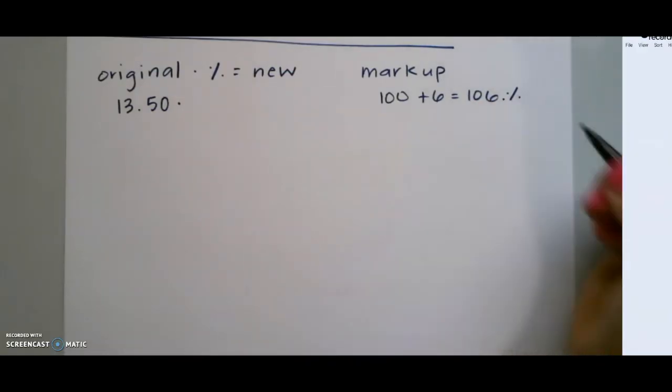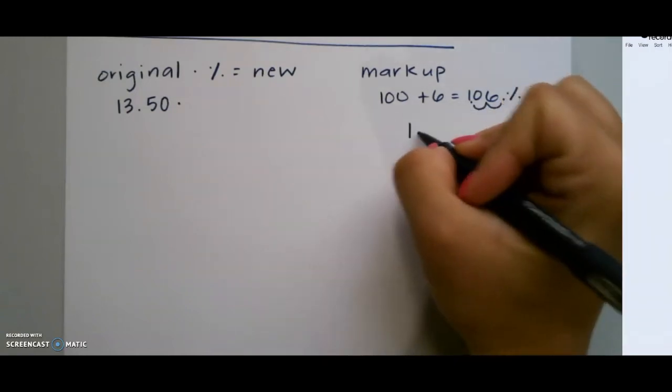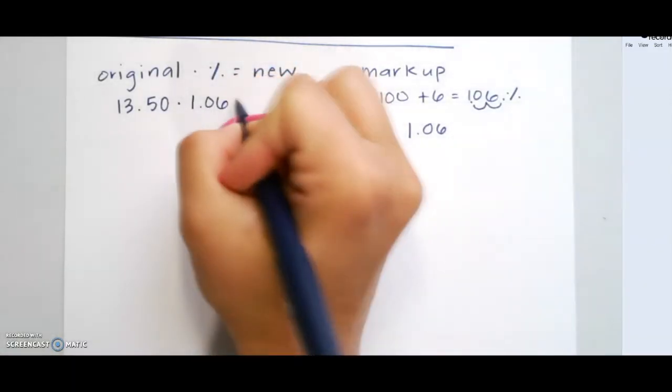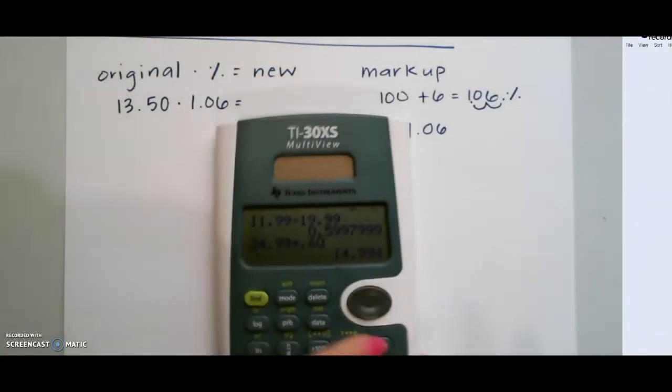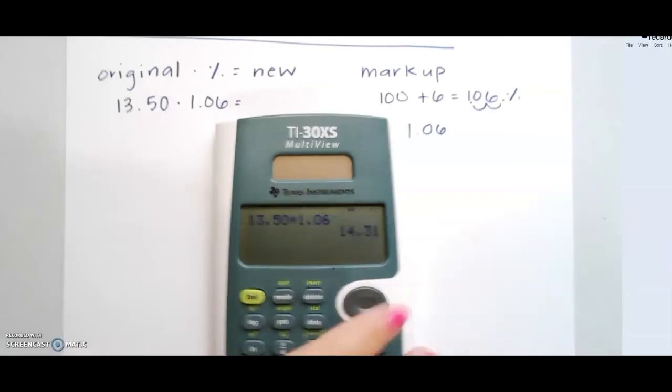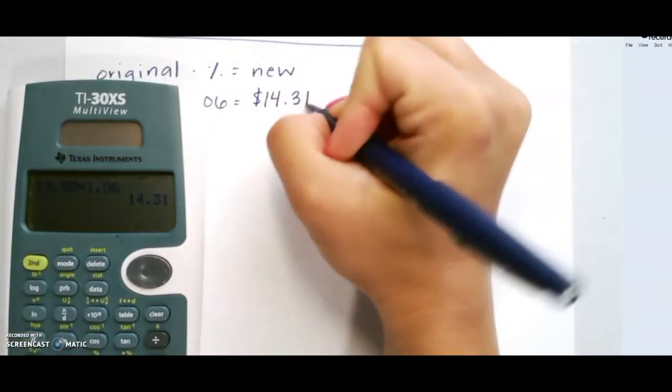Remember, add the decimal at the end and move it two places to the left. So here we have 1.06. So that goes into the place of the decimal, and then we multiply. $13.50 times 1.06, which means our new price with our tax is $14.31.